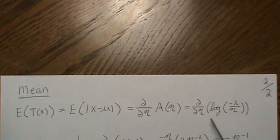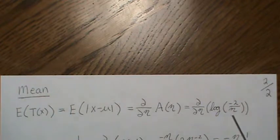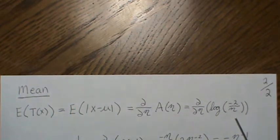On the previous page, we said the log partition was this, log of minus 2 over eta.